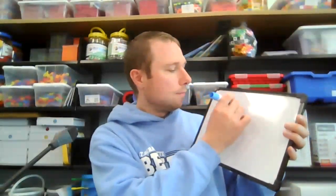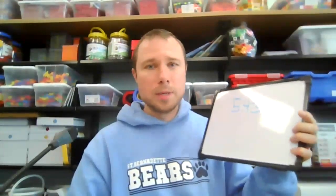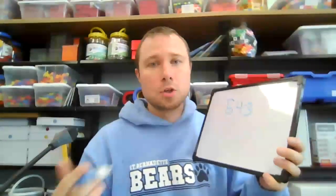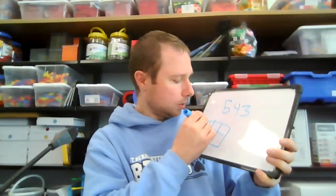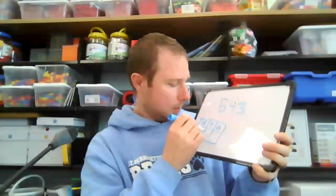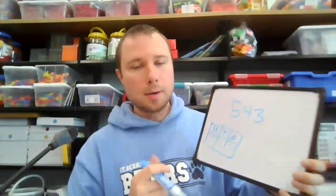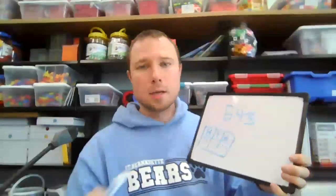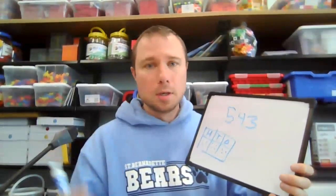The first thing they're going to do is have a number — 543 is the one on the practice one — and they have to use strategies we've been talking about in class to represent or show their number. They could do a place value chart like this: hundreds, tens, ones — so there'd be five hundreds, four tens, three ones. They could also do a number line, or use base ten blocks.